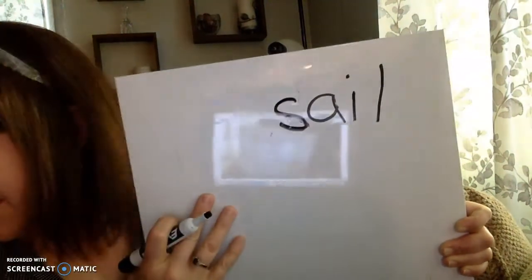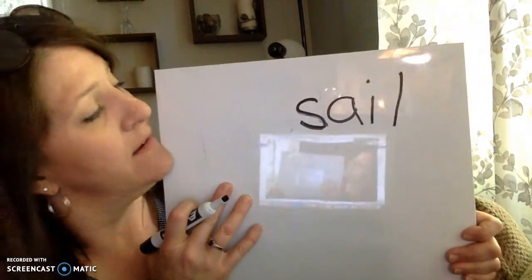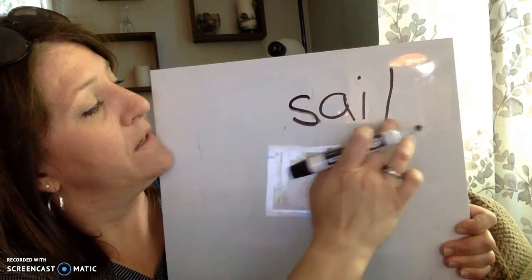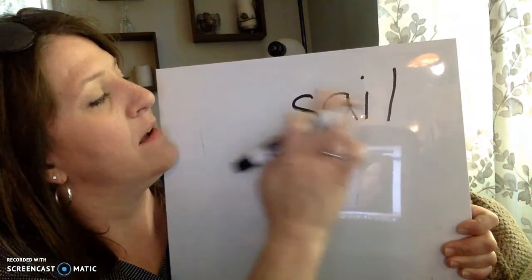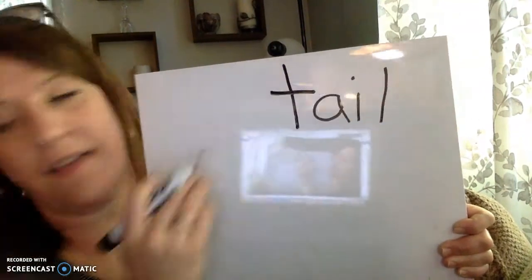Okay. Let's change sail into tail. Tail. Tail. Still A in the middle. But a T at the beginning.